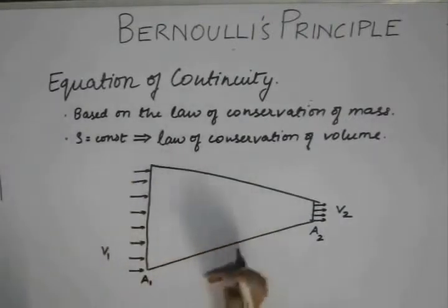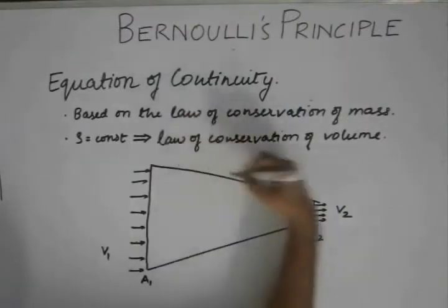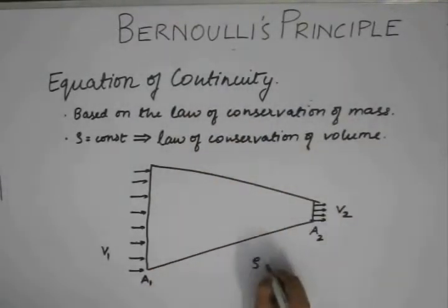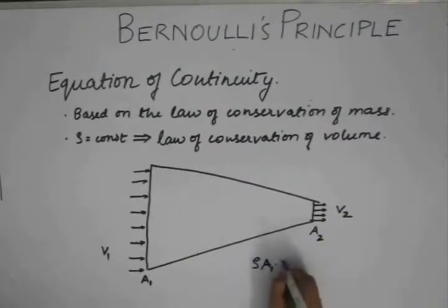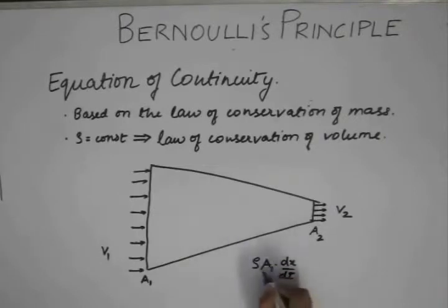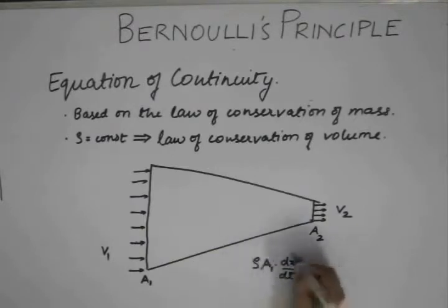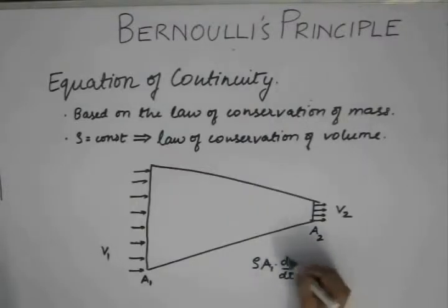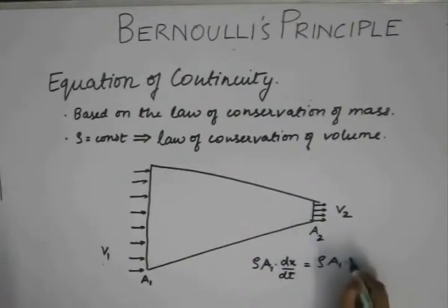If we apply the equation of continuity, from the law of conservation of mass, the mass entering is rho times a1 times the small distance the fluid travels in a small time interval dt. This quantity is basically the mass of the fluid which enters. Dividing by dt gives velocity, so this becomes rho times a1 times v1.